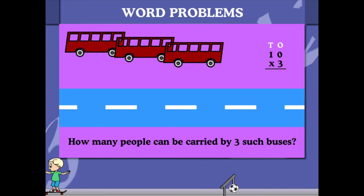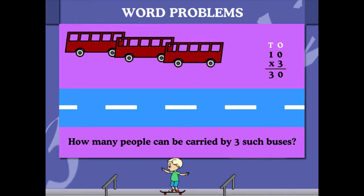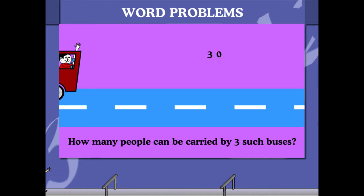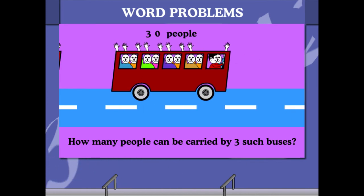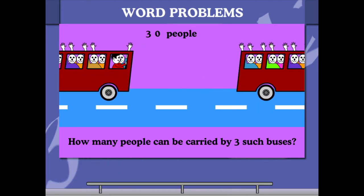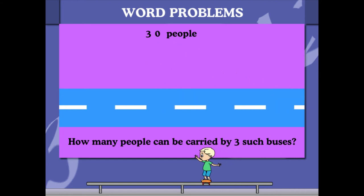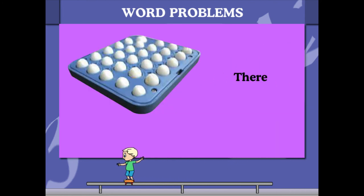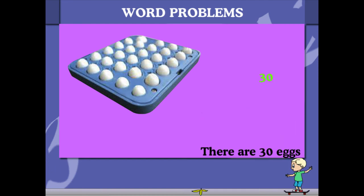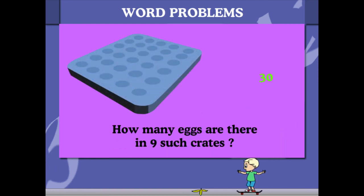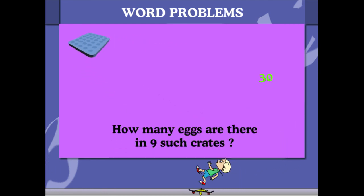3 into 0 is 0, and 3 into 1 ten is 3. That gives 30. So, 3 buses can carry 30 people. Here is a crate of eggs having 30 eggs. How many eggs are there in 9 crates?